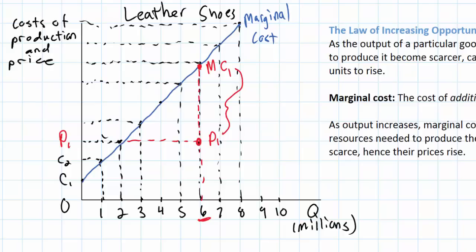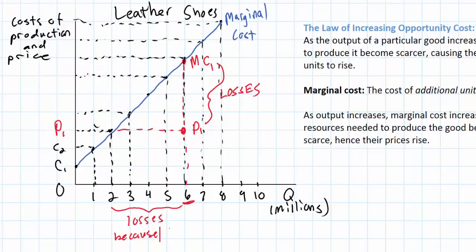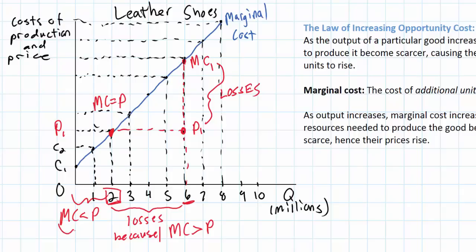What does this mean for the producers? They would be earning losses on the margin. In fact, for every pair of shoes produced beyond 2 million, they would be earning losses because beyond 2 million shoes at a price of P1, the marginal cost is greater than the price. So how many shoes would producers be willing to produce at a price of P1? Obviously at P1, based on the marginal cost that firms face, they would be willing to produce up to, but not beyond, 2 million shoes. The reason is that at 2 million, the marginal cost equals the price. Firms would break even on the 2 millionth pair and earn profits on every pair before that, because for every pair between 0 and 2 million the marginal cost is less than the price. However, every pair beyond 2 million, the marginal cost exceeds the price and they would be earning losses.